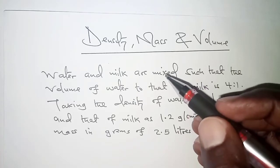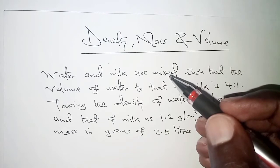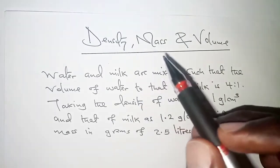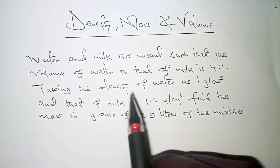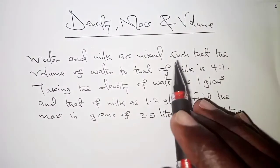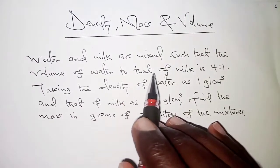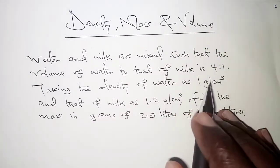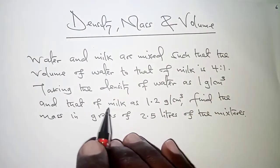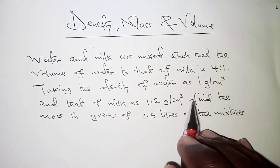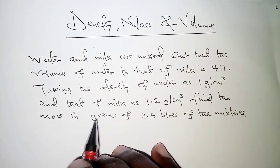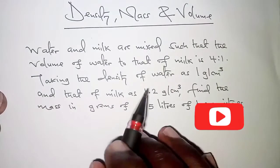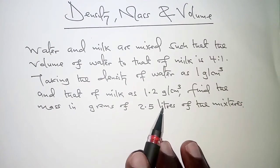Hello everyone, welcome back to our channel. In today's video we have a question on density, mass and volume. The question reads: water and milk are mixed such that the volume of water to that of milk is 4 to 1, taking the density of water as 1 gram per cubic centimeter and that of milk as 1.2 grams per cubic centimeter. Find the mass in grams of 2.5 liters of the mixture.